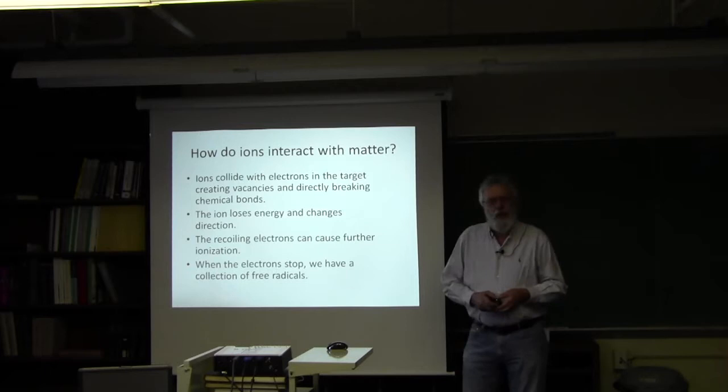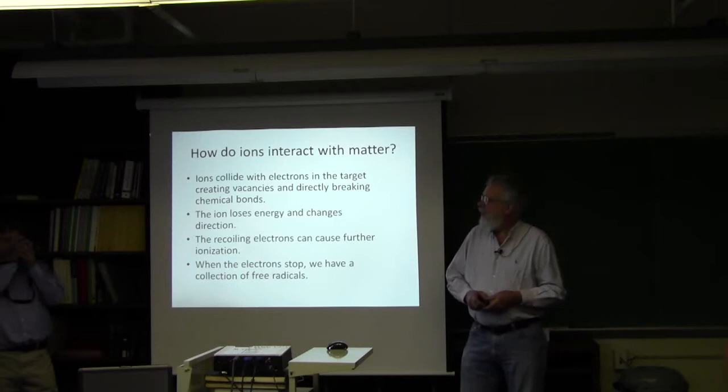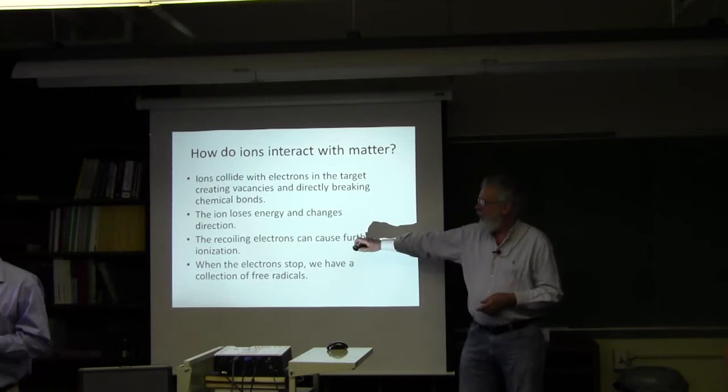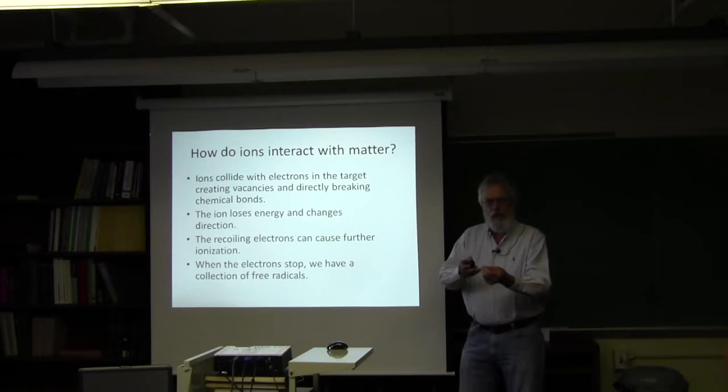So the first thing we have is that when ions go through matter, they collide with electrons in the target material. They create vacancies, which can directly break chemical bonds. The other effect is that the ion, as it is doing that damage to the material, it's losing energy and also will change its direction. There are also the recoiling electrons can also then become ions which do their own damage. So the ion that's coming in does damage directly, but it knocks out electrons which have energy and then also cause ionization somewhere away from the immediate path of the particles.